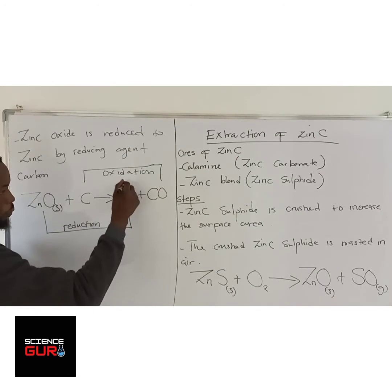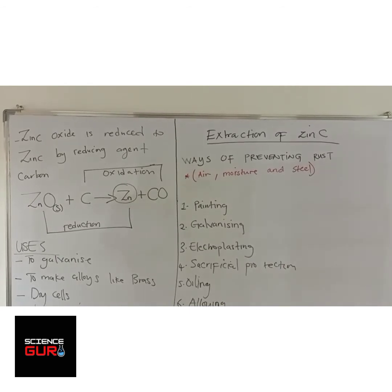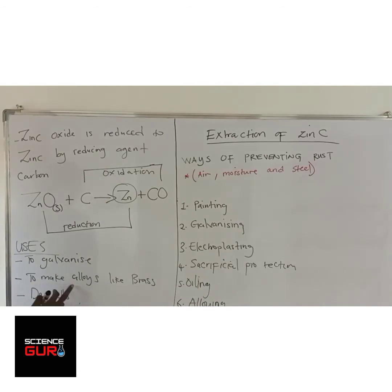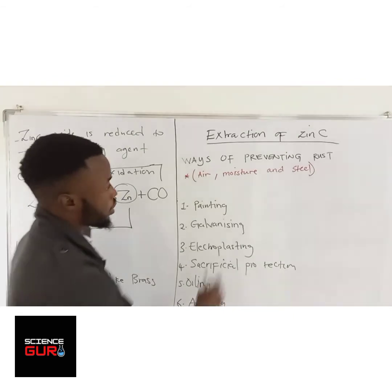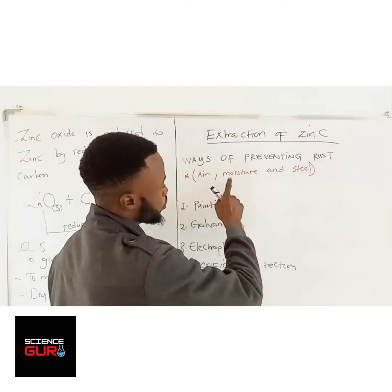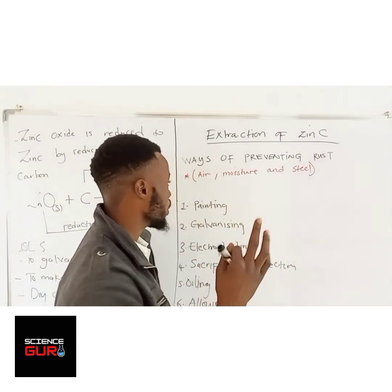Now let's look at the uses of zinc. Zinc has several uses: to galvanize, to make dry cells, and to make alloys. For example, brass is an alloy — a mixture of copper and zinc.